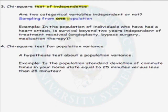Here's an example. In the population of individuals who have had a heart attack, is survival beyond two years independent of the treatment received at the time of the heart attack — whether it would be angioplasty, bypass surgery, or medication therapy? In this scenario, we sample from the population of people that have had a heart attack.